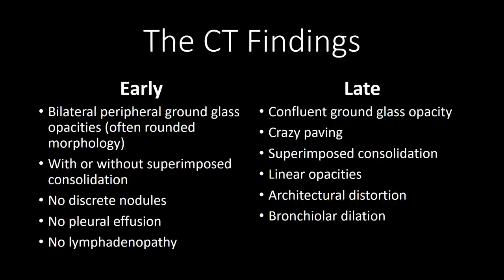Pleural effusions are not characteristic of the disease, and lymphadenopathy is not characteristic. As the disease progresses, the ground glass opacification tends to become more confluent. It often remains peripheral but can become more diffuse throughout the lung.